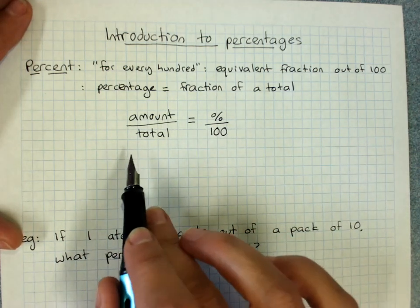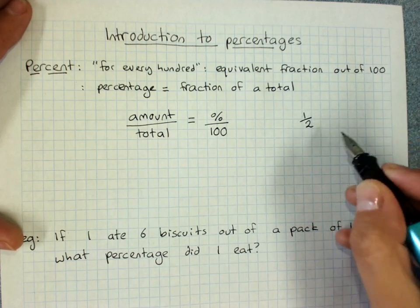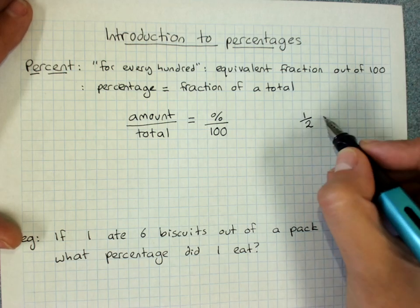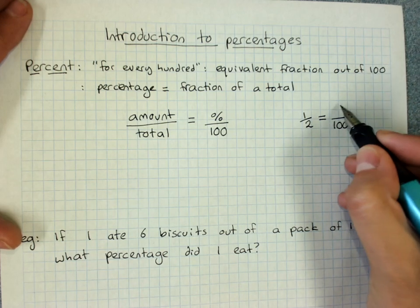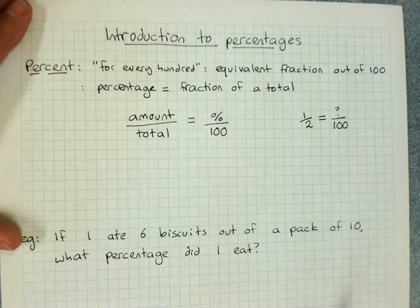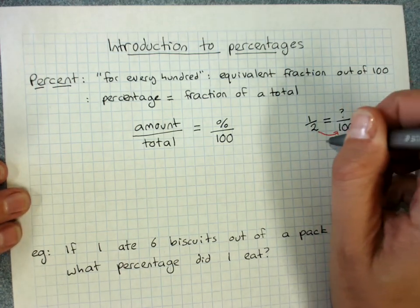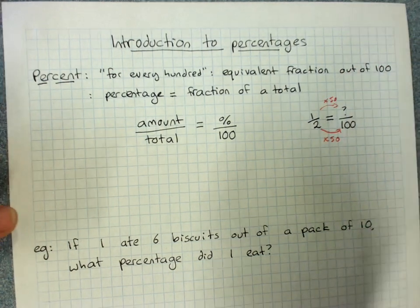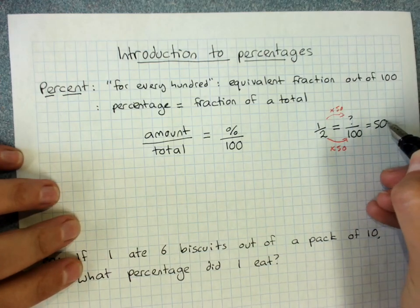We learnt equivalent fractions. So, for example, one out of two — I ate one piece out of the two pieces of pizza that were available. What is that out of a hundred? Whatever it is out of a hundred as an equivalent fraction is the percentage. How did I get from two to a hundred? I times it by fifty. So this will be fifty out of a hundred — that's fifty percent, which means a half is fifty percent.